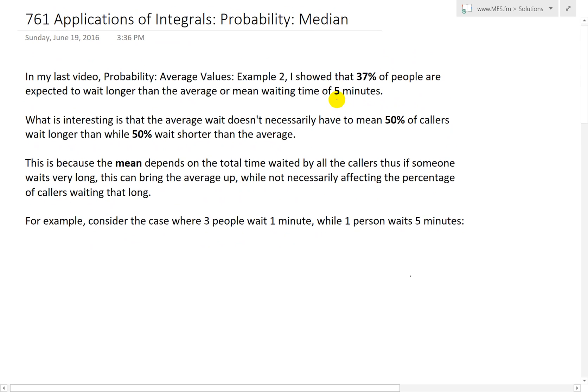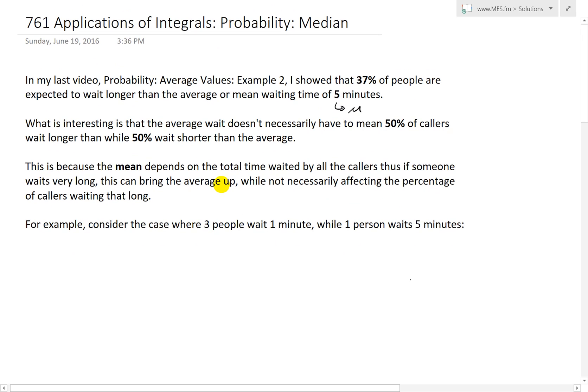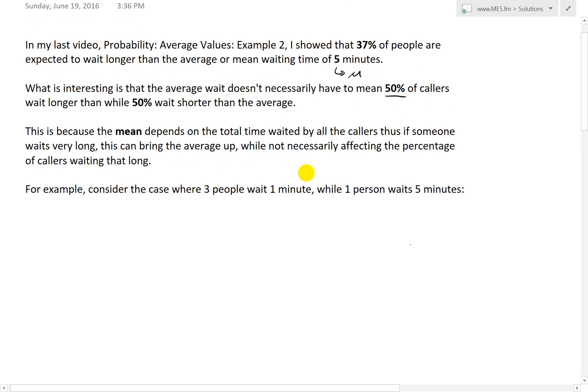If this is the average, you could write this as the average or mean using the Greek letter mu. Even though it's 5 minutes, what is interesting is that the average wait time doesn't necessarily have to mean 50% of the callers wait longer than while 50% wait shorter than this average. As you can see, 37% wait longer.